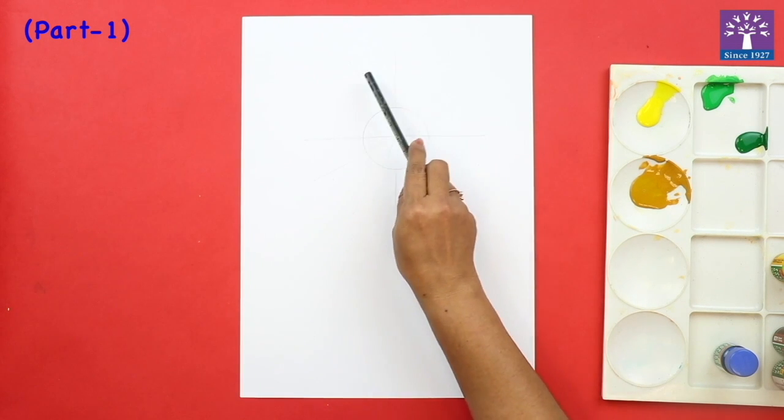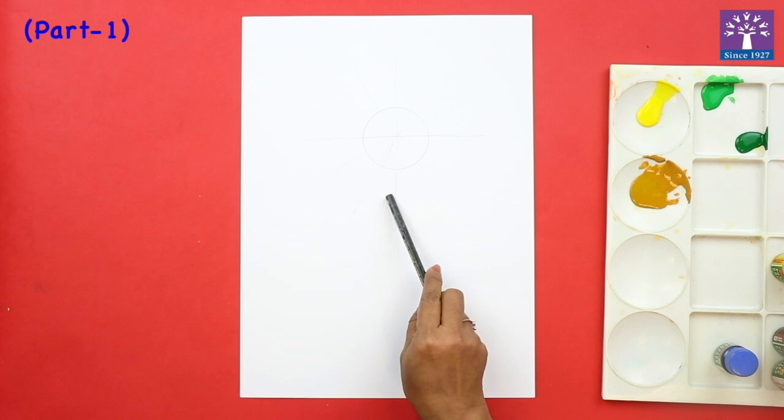So totally we have 1, 2, 3, 4, 5, 6, 7, 8, 9, 10, 11, 12 lines.